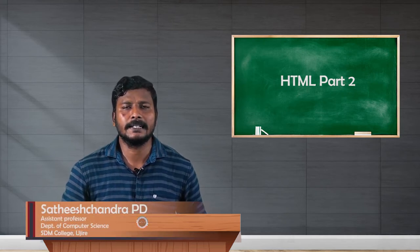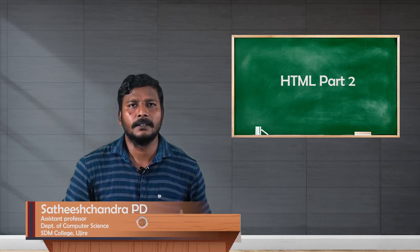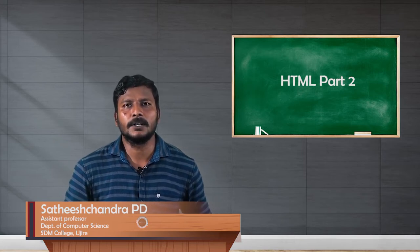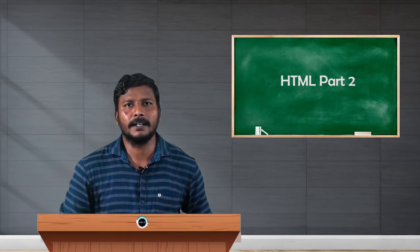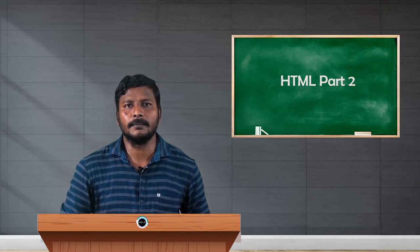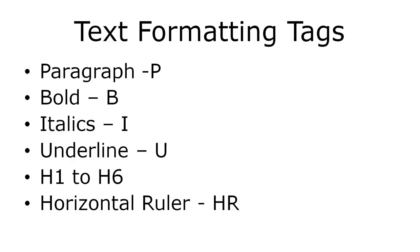In the previous video we discussed how we can use tags and attributes in HTML, and also we discussed the body tag and its attributes, and how to define colors in HTML by color name or color code. In this video, we will discuss text formatting tags. The first tag I want to discuss is the paragraph tag, which is used to start a paragraph. The tag used to define a paragraph is 'p' and it has one attribute: align.